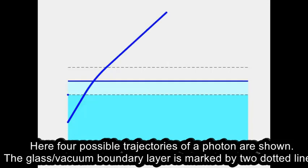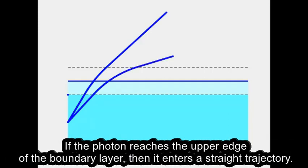Here possible trajectories of a photon are shown. The glass vacuum boundary layer is marked by two dotted lines. If the photon reaches the upper edge of the boundary layer, then it enters a straight trajectory. Otherwise,